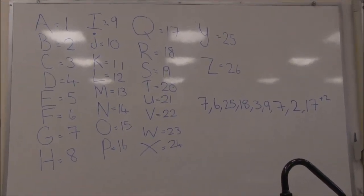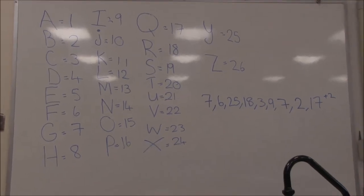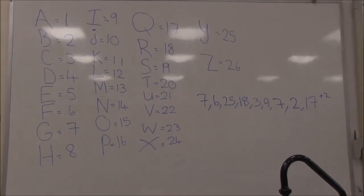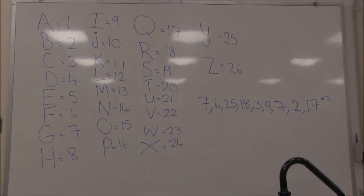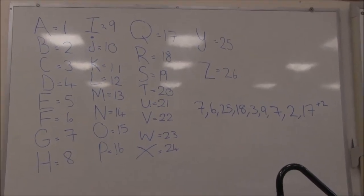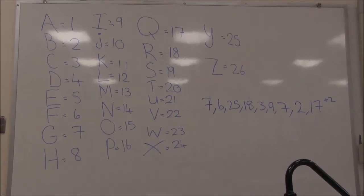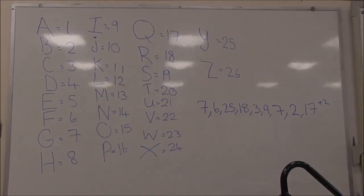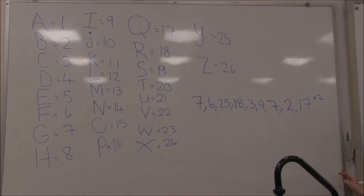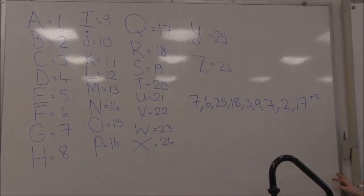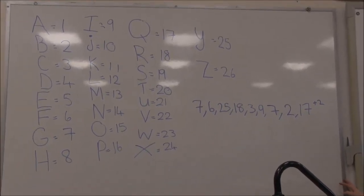If there is an adding, subtracting, multiplying, or dividing sign, like there is in the code, add, subtract, divide, or multiply the number following the sign by the numbers of the code. In this code, we would add 2, 2, 7, 6, 25, 18, 3, 9, 2, 17.